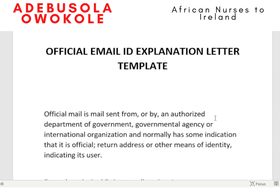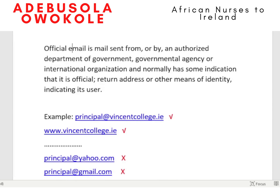So what is an official email in the first place? An official email is a mail that is sent from or by an authorized department of government, an agency, or an organization. It means the email itself has a domain identifier — for example, principal@vincentcollege.ie, where vincentcollege.ie is the domain.